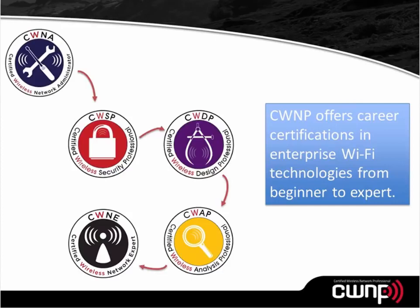Once you have your CWNA, CWSP, CWDP, and CWAP, if you choose, you can apply for the Certified Wireless Network Expert. The four before it all have an exam associated. With the CWNE, instead of passing an exam, you submit an application to the board of advisors — six different CWNEs who evaluate it and determine your qualification. It requires three years of enterprise experience and having passed all four of the other exams, making it an elite certification that nearly a couple hundred people now hold.